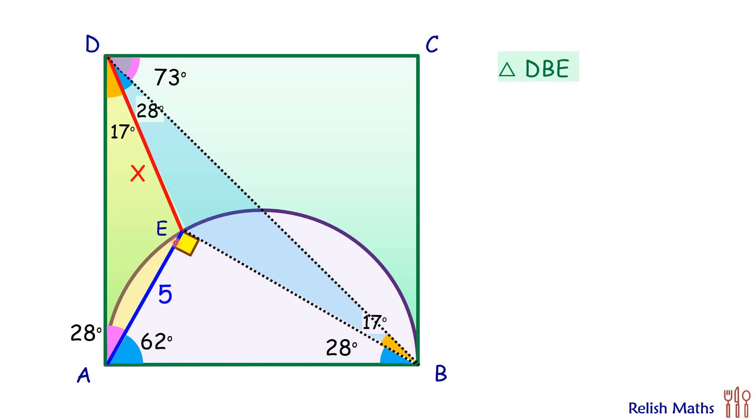And thus the ratio of corresponding sides will be equal, or we can say that DE upon DB equals AE upon AD.